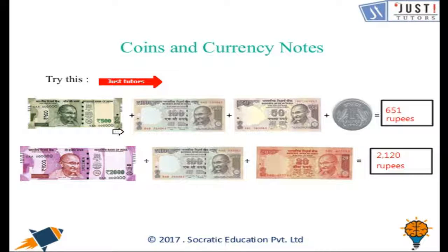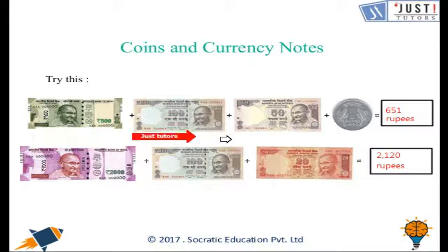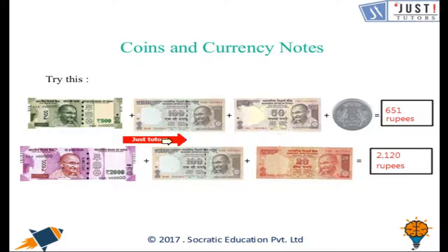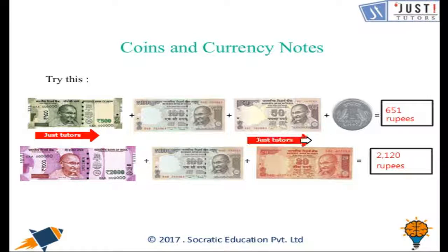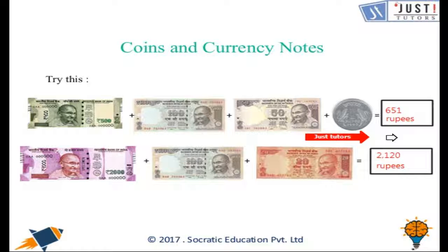Let's check the answers. Here you have a 500 rupee note, a 100 rupees note, a 50 rupees note, and a 1 rupee coin. If you add 100 to 500, it will be 600. Add 50 to get 650, then add 1 to get 651 rupees.